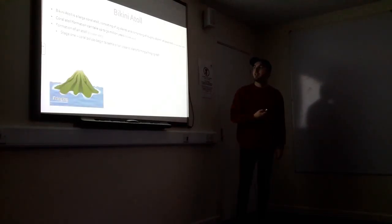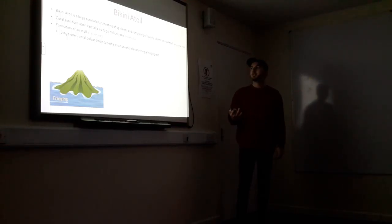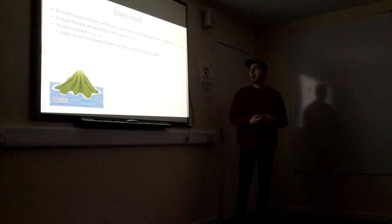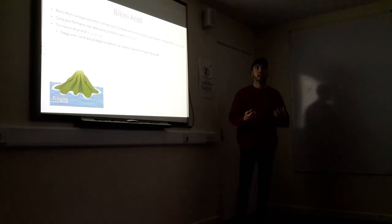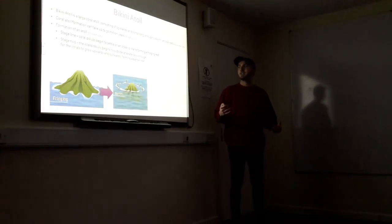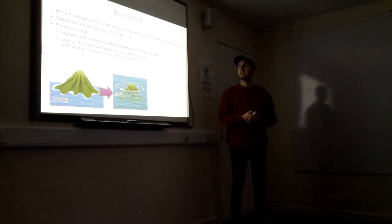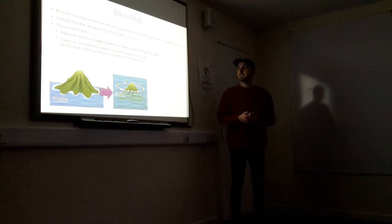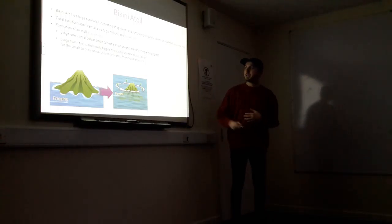We'll have a little look at how the formation of an atoll actually occurs. The first stage is where coral polyps begin to settle on oceanic islands, forming a fringing reef around islands, usually volcanic islands. Then the second stage is that the island slowly starts to subside, and if it's at a slow enough rate, the corals can grow upwards, forming a barrier reef, which is the second picture there.